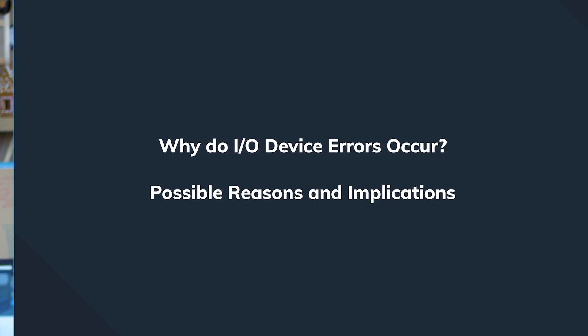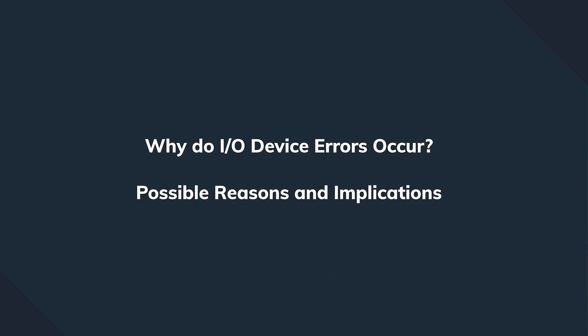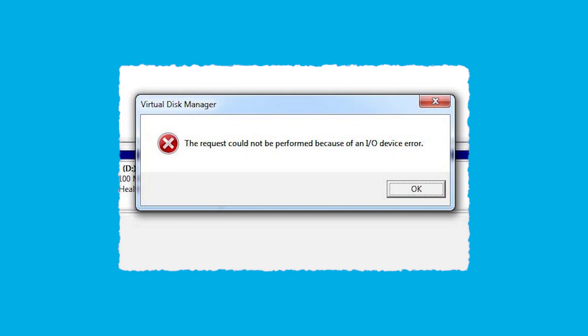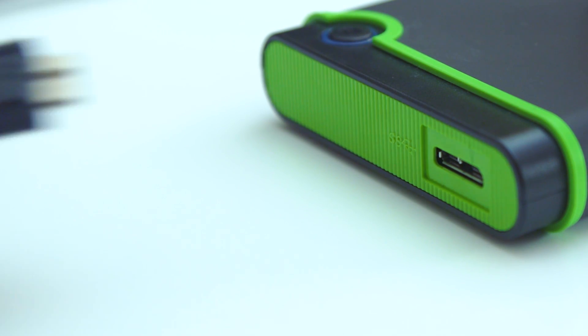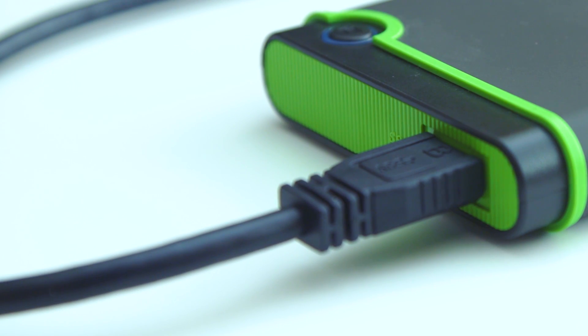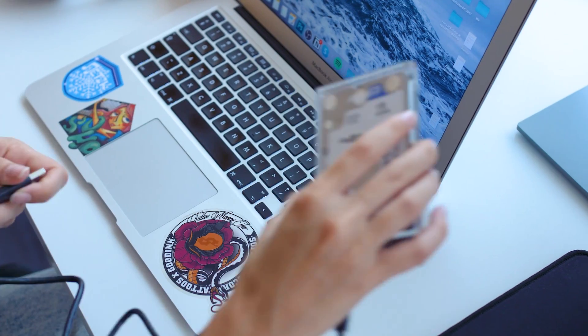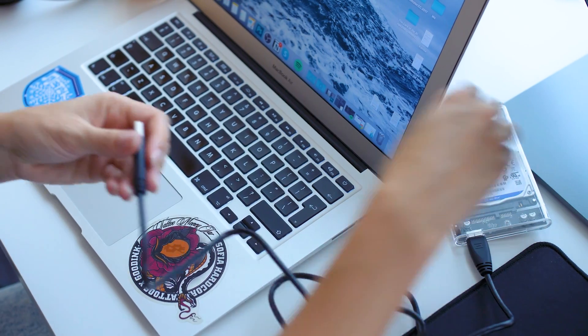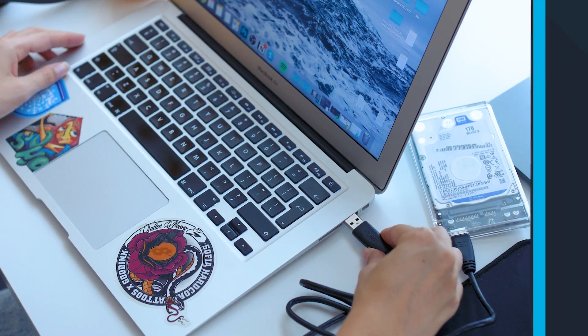Let's bring the common sense in — before troubleshooting anything we need to find the root cause. The input/output device error occurs when your Windows loses its ability to perform any output or input action, such as copying or reading data while trying to access a drive or disk. It can happen to any type of device or media meant to do input or output activity.